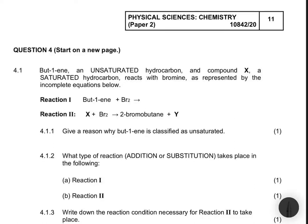But-1-ene, an unsaturated hydrocarbon, and compound X, a saturated hydrocarbon, reacts with bromine as represented by the incomplete equations below. Question 4.1.1: Give a reason why but-1-ene is classified as unsaturated. It is classified unsaturated because it has double bonds.